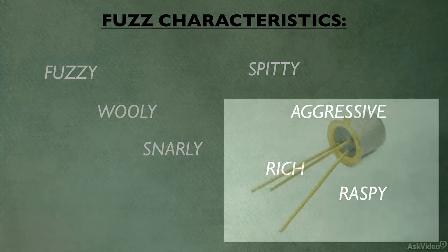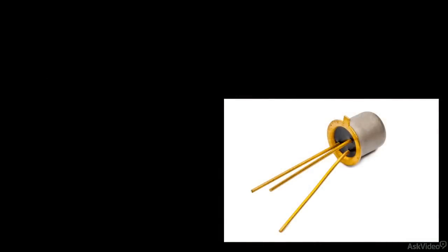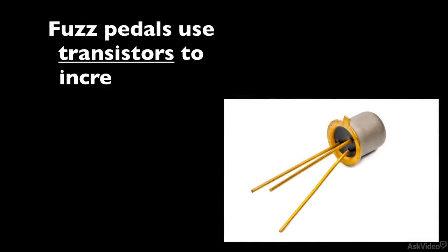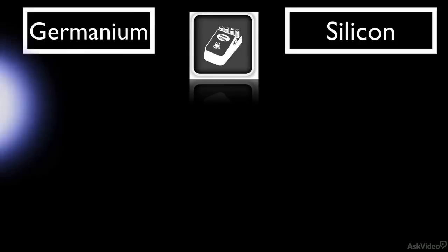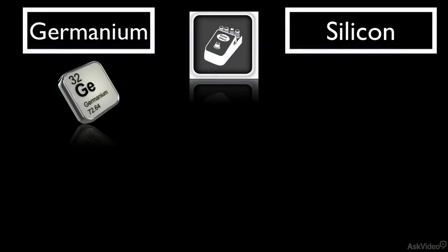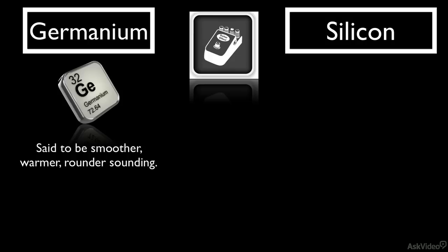To achieve its distortion, the fuzz pedal employs transistors. The transistor is an electronic component that was developed to replace the vacuum tube, and as such, it's used in the pedal to increase gain. Transistors in fuzz pedals are generally broken down into two different categories: germanium transistors and silicon transistors. The very first fuzz pedals employed germanium transistors, and these are often revered by guitarists for their smoother, warmer, and rounder sound.